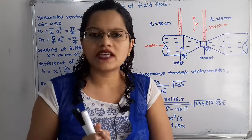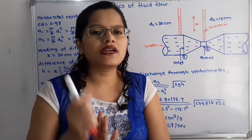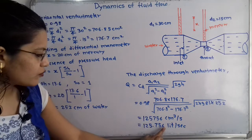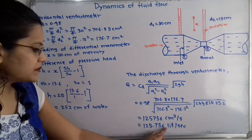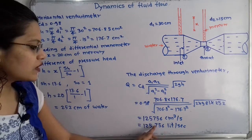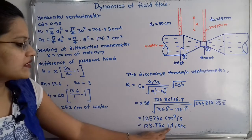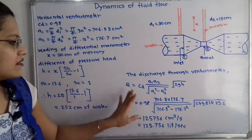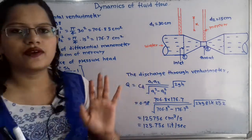We can convert this to liters per second by multiplying by 10 to the power minus 3, which means shifting 3 digits to the left. So the discharge is 125.756 liters per second. This is the final answer for the discharge through the venturimeter.